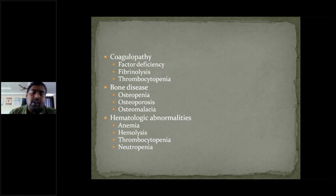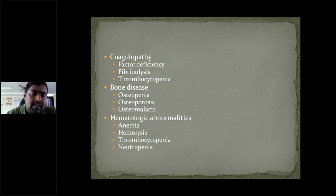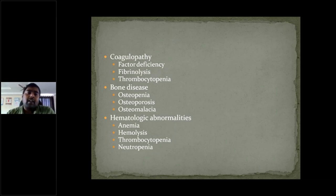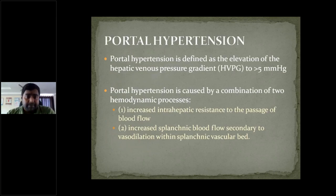There is a decrease in all cell lineages — hemoglobin, thrombocytic, and neutrophil cell lineages are all decreased in cirrhosis of the liver. These are the various complications of cirrhosis. Now coming to portal hypertension in detail.